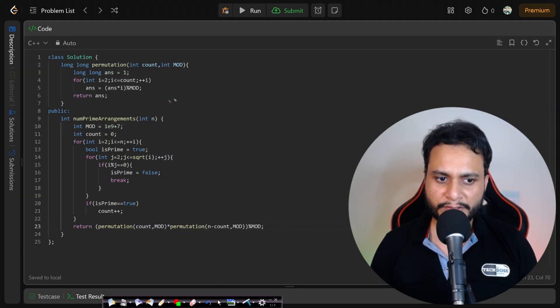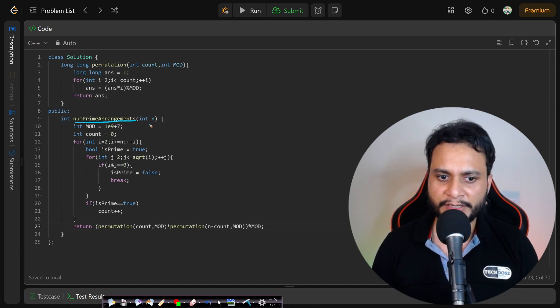Let's look at the code. This is the main function, numPrimeArrangements, and we're given a number n. We've taken the mod as asked in the question and a counter. We iterate for all numbers from 2 to n because 1 is not a prime number. We check if the given number is prime, and if so, increment the counter to count the number of prime numbers.